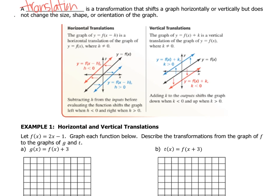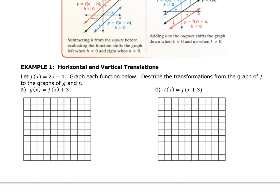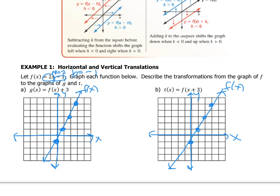Let's look at what these shifts might look like in an equation or function. We're going to create the graph f of x equals 2x minus 1 and then apply transformations to it. Pause the video and graph f of x equals 2x minus 1 on each grid. It's in slope-intercept form, so use m equals 2 and b equals negative 1.